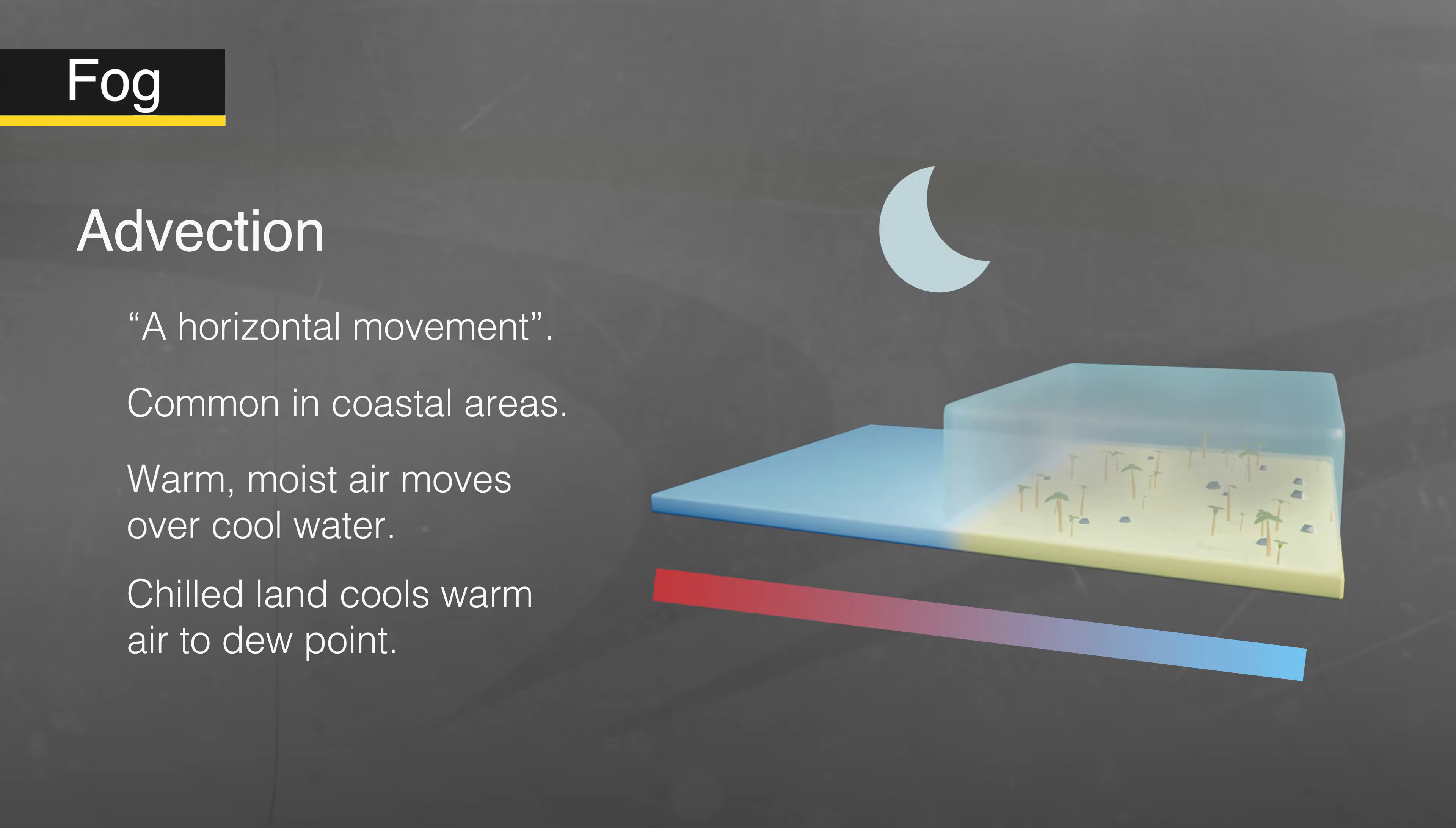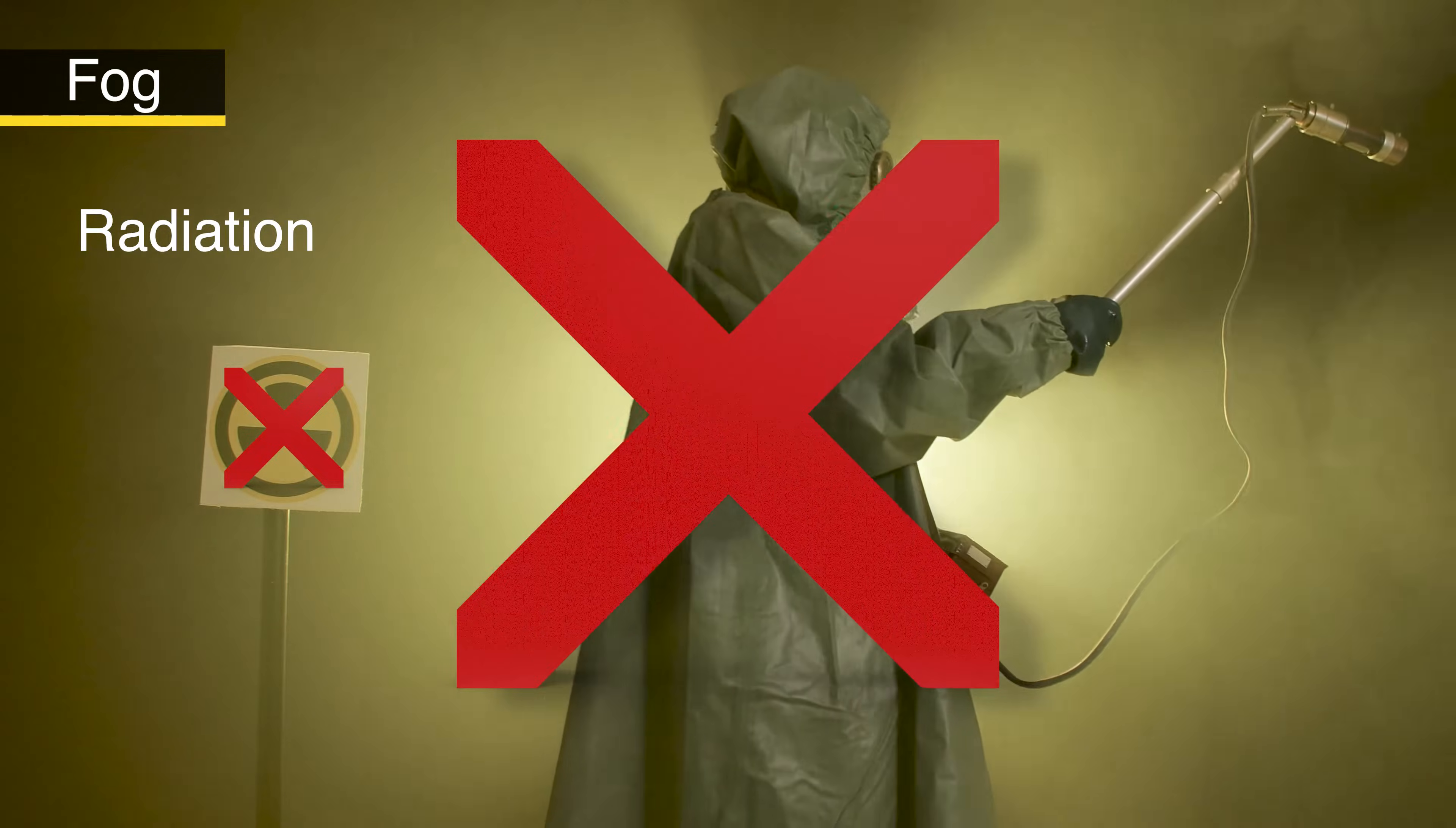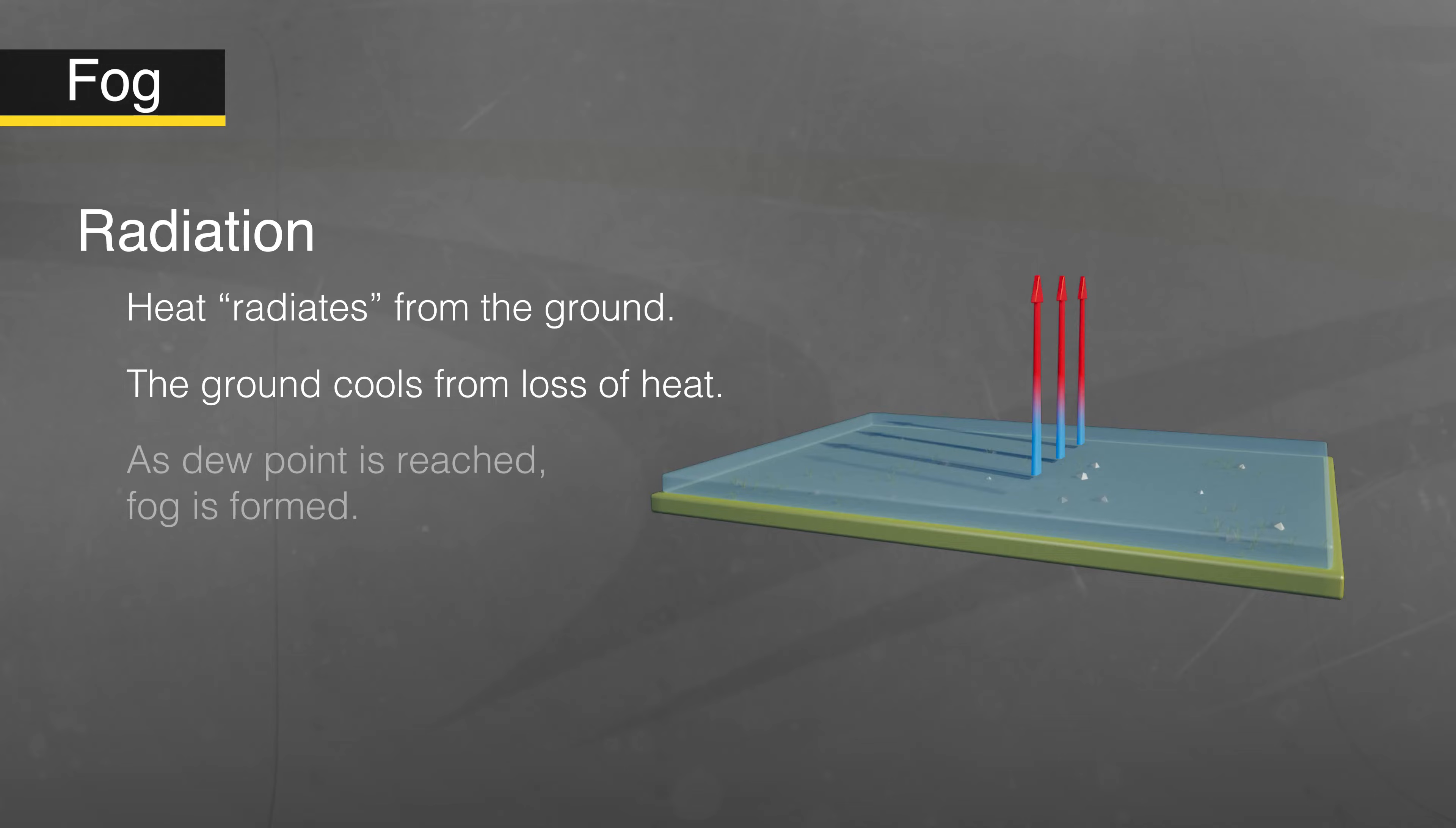Radiation fog will not make you glow in the dark. In this case, radiation refers to heat radiating from the earth at night, cooling the ground and the air close to the surface. When the air temperature reaches its dew point, fog is formed. Radiation fog is sometimes referred to as ground fog. It's most common in warm moist air over low flatland areas on clear calm nights.